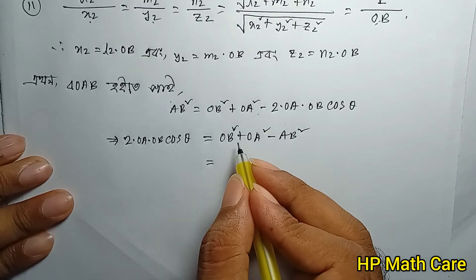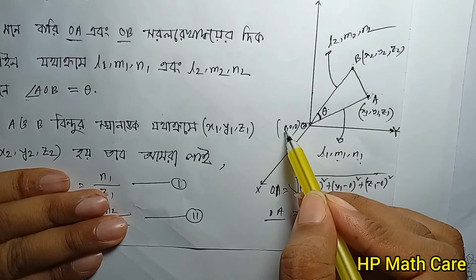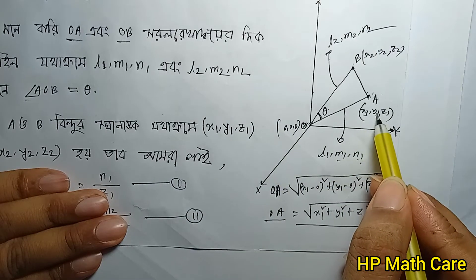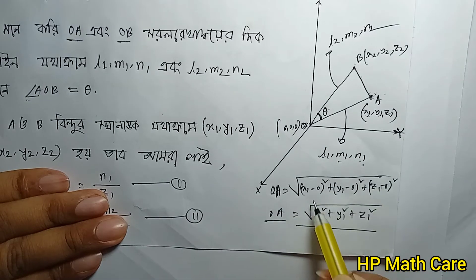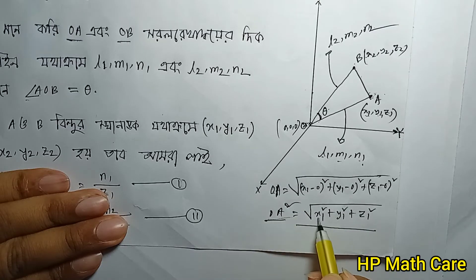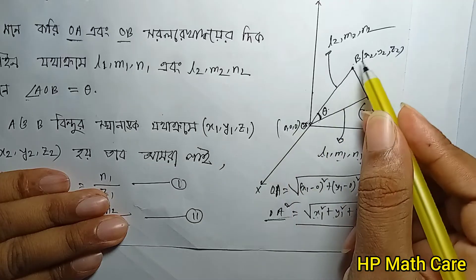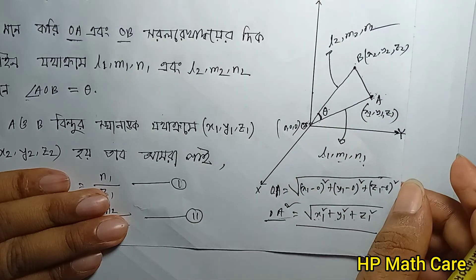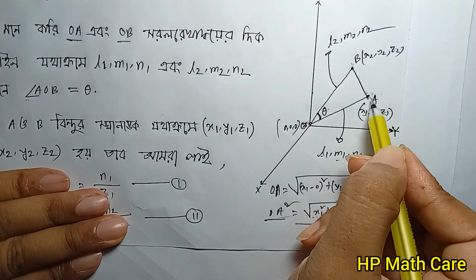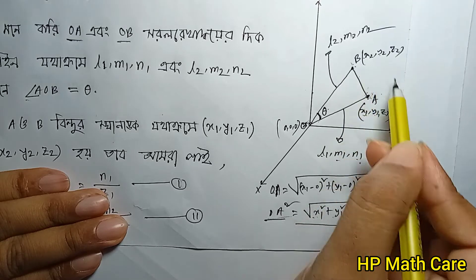Let's see OA squared. OA squared equals root of x1 minus 0 squared plus y1 minus 0 squared plus z1 minus 0 squared — which is x1 squared plus y1 squared plus z1 squared. And OB squared equals x2 squared plus y2 squared plus z2 squared. And AB squared equals x1 minus x2 squared plus y1 minus y2 squared plus z1 minus z2 squared.